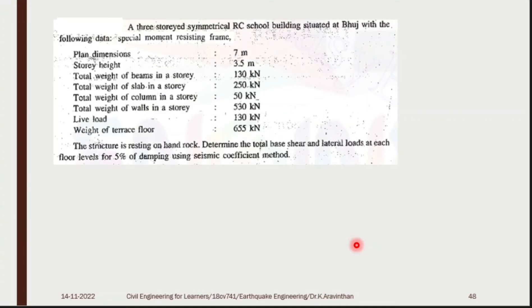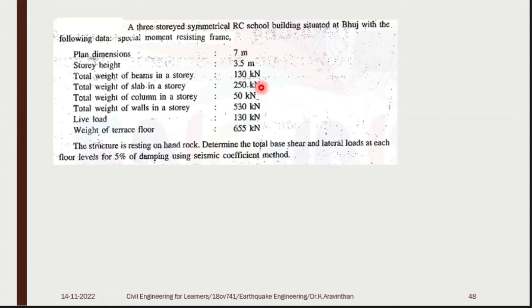Example problem: A 3-storey symmetrical RC school building is situated at Booch, constructed as a Special Moment Resisting Frame (SMRF). Plan dimension is 7 meters, storey height is 3.5 meters. The given data: total beam weight per storey = 130 kN, total slab weight = 250 kN. Note that the slab self-weight is always more than the beam self-weight in any structure.